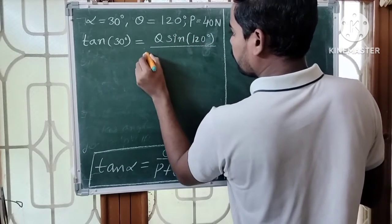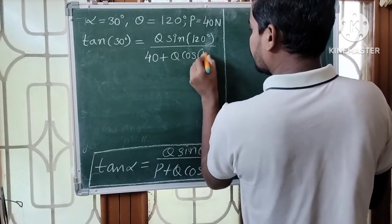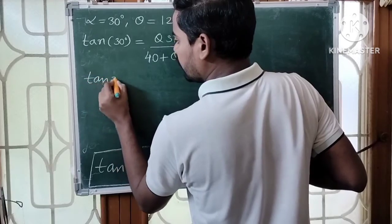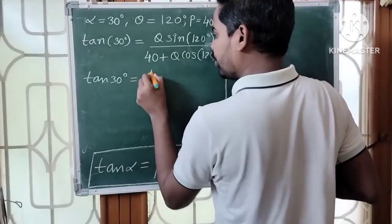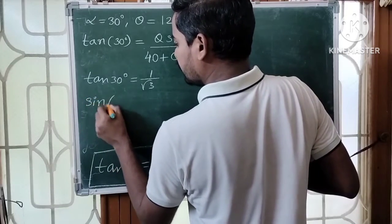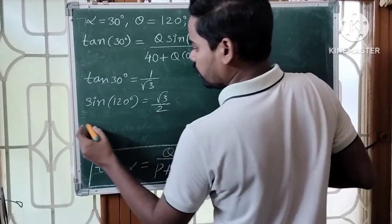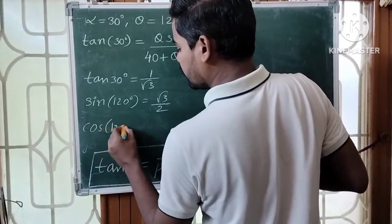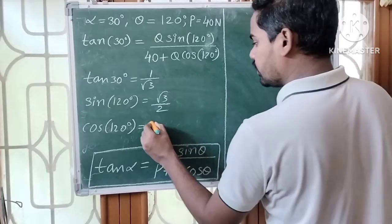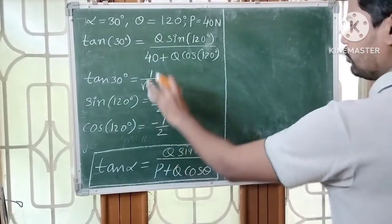Tan 30 degrees equals 1 over root 3. Sin 120 degrees equals root 3 over 2. Cos 120 degrees equals minus 1 over 2. These are all standard trigonometric values. Let us substitute all values.